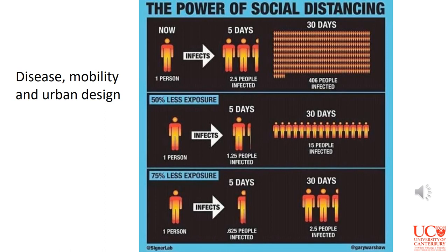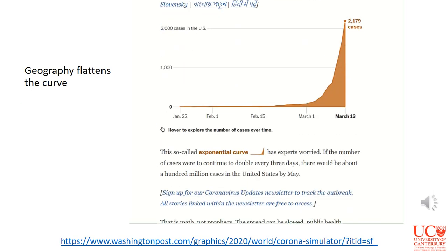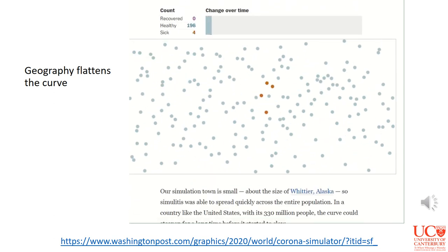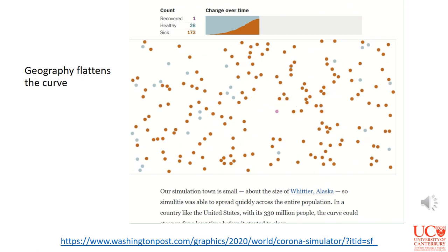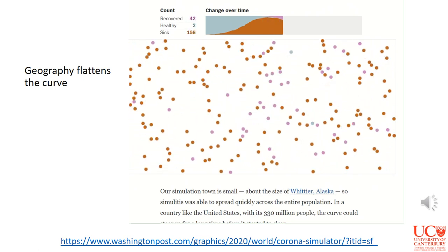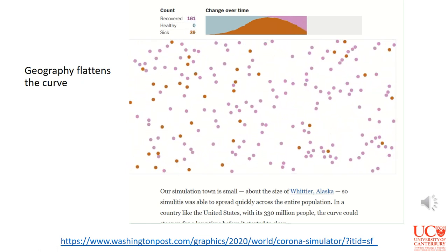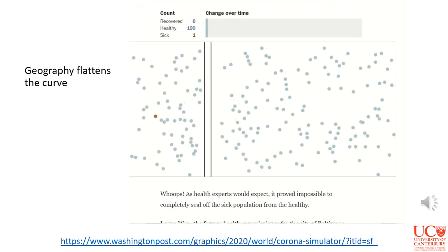Another example of geography is the power of social distancing, because this is all about the social interaction of people with each other. This figure shows that if one person infects two and a half people, after 30 days that one person has ended up infecting over 400 people. With 50% less exposure you end up with 15 people infected after 30 days, and with 75% less exposure you end up with just two and a half people infected. This is all about mobility of people — the people, the space they're in, and the space they intersect. The Washington Post has produced neat visualizations of this: in the first example, free movement means one person interacts with everyone around them and disease spreads incredibly quickly.